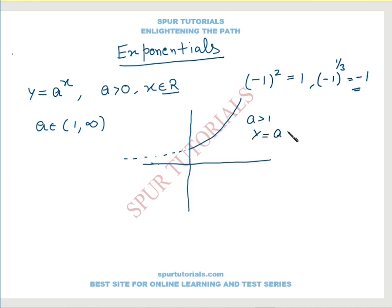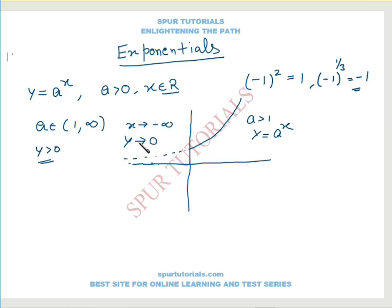The graph of y equals a raised to power x for a greater than 0 — y can never be negative, so y is always greater than 0. When x tends to minus infinity, y tends to 0, approaching from the positive side. At x equals 0, this point is (0, 1) — for any value of a, when x is 0, y equals 1. And when x tends to infinity, y also tends to infinity.